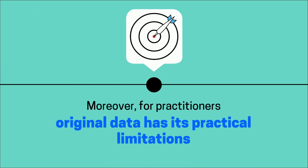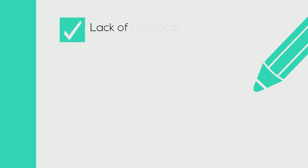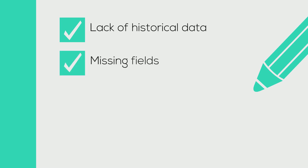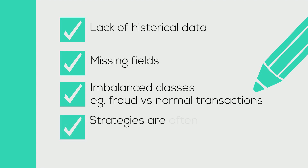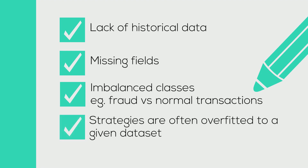Moreover, original data has a lot of shortcomings in practice: lack of historical data, missing fields, imbalanced classes, and overfitted strategies on a given data set.